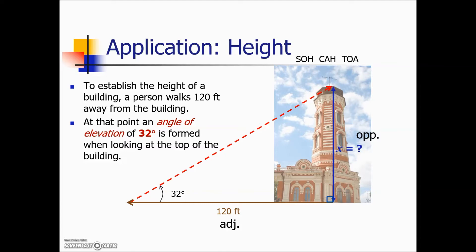Using the trig ratio involving opposite and adjacent we will choose tangent. Plugging in the particulars for this example tangent of 32 degrees is equal to our unknown opposite over the adjacent 120 feet. Multiplying both sides by 120 to get x by itself gives us an answer for the height of this building of 75 feet.